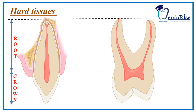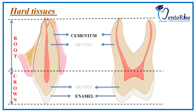The outer covering of the crown is made up of enamel, which is the hardest substance known. The outer covering of the root is made up of cementum. The bulk of the tooth is formed by the second layer, the dentine, which is present both in the crown and the root as shown in the figure. Thus, enamel, cementum and dentine constitute the hard tissues of the tooth.